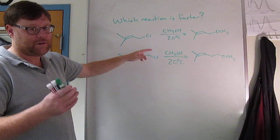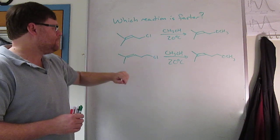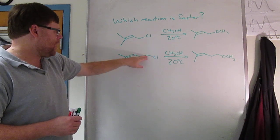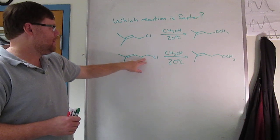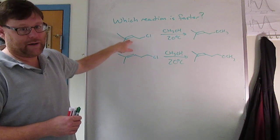In the top reaction, well in both reactions, chloride is the leaving group. Identify the leaving group: chloride, primary. This one is allylic, this one is not. Allylic just means it's on a carbon bonded to a double bond.